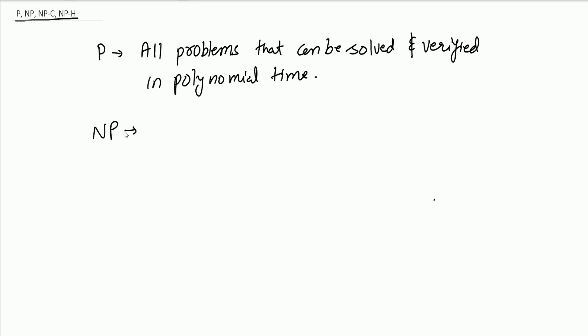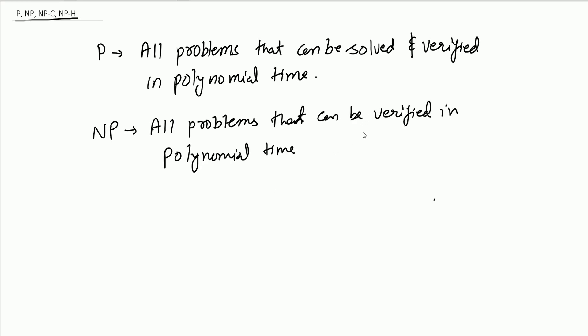NP problems — most people get confused between P and NP. They think that whatever is not P is NP, but that is not the case. NP problems are all problems that can be verified in polynomial time. Verification means: if I give you a problem and a solution, and you can tell whether that solution is correct or not, that is verification. All problems verifiable in polynomial time, but for which we cannot say whether they can be solved in polynomial time, are NP problems.